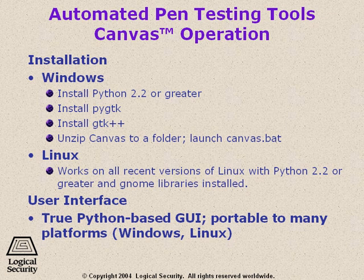The installation is pretty simple. You have to install Python first, get that up and running, then you install the Python GTK, the Graphic Tools Kit, install GTK++, which is another Graphic Tools Kit compiler and runner, and then you unzip Canvas into a folder and launch the canvas.bat file. That's the batch file that actually gets Canvas up and running.